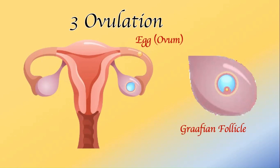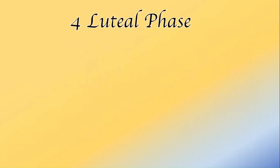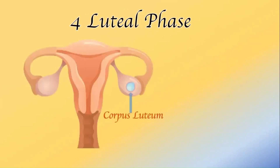If sexual intercourse takes place during this period, sperm from a male partner enters into the vagina and travels up to the fallopian tube, where the sperm and ovum combine together, which may ultimately result in pregnancy. The one follicle which has released the egg is now named the corpus luteum, and based on its name, the fourth phase is named the luteal phase.